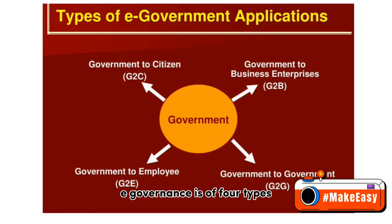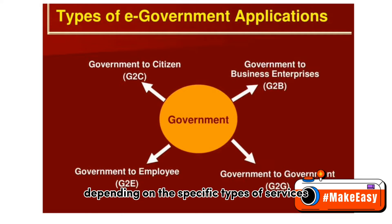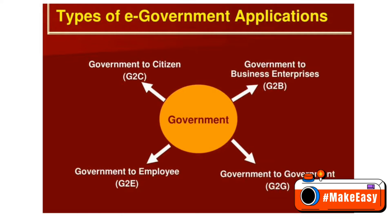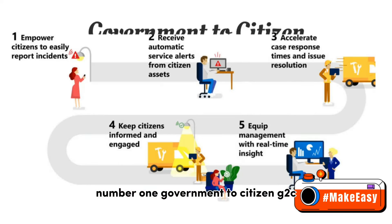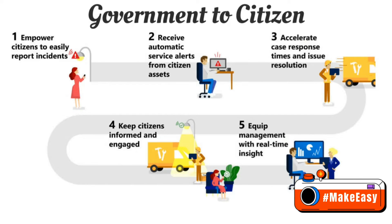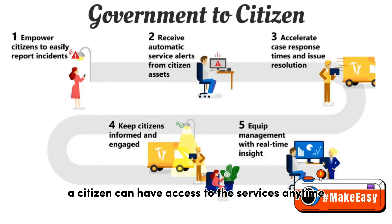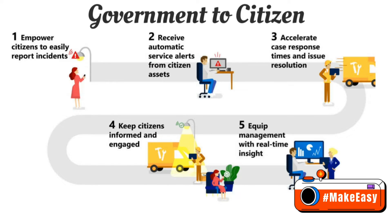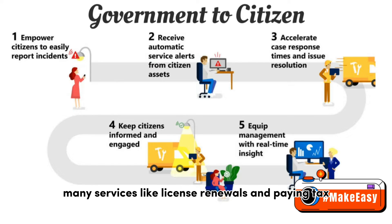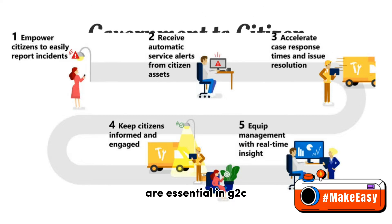E-governance is of four types depending on the specific services. Number 1: Government to Citizen (G2C). This refers to government services accessed by the general public. A citizen can access these services anytime, from anywhere. Many services like license renewals and paying tax are essential in G2C.